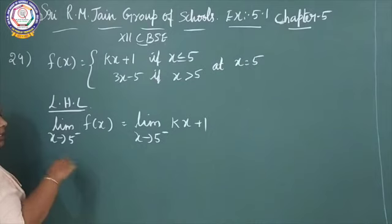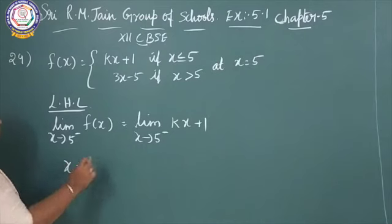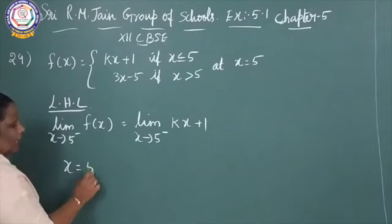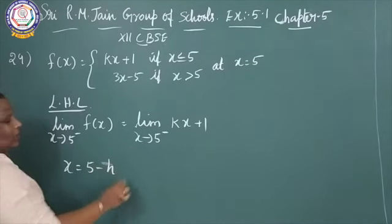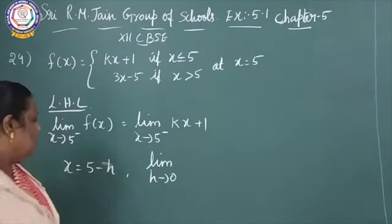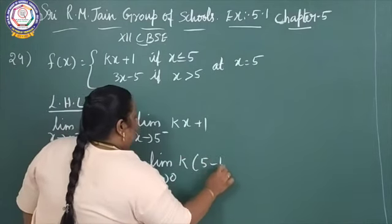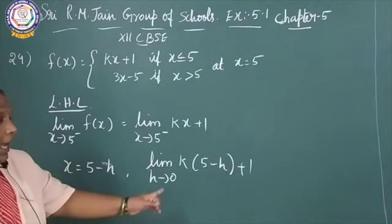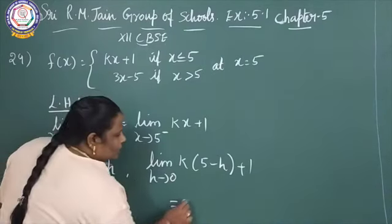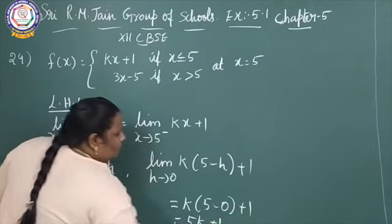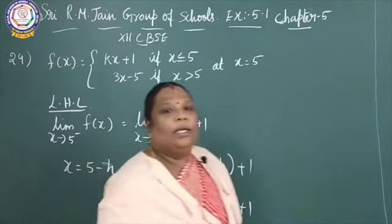For kx plus 1, we change to h tends to 0 by replacing x equal to a minus h, where a is 5, so x equals 5 minus h. Taking limit h tends to 0 of k into (5 minus h) plus 1, and substituting h equal to 0, we get k into 5 minus 0 plus 1, which gives 5k plus 1. So the left hand limit is 5k plus 1.